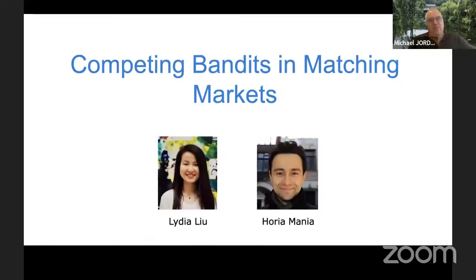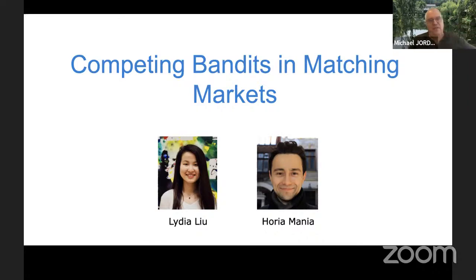Vignette two is about mechanism design for matching markets with exploration. This work was with Lydia Liu and Hoya Mani, and is very much a 'restaurants match with diners' kind of model. On the learning side of this interface, we're going to use the multi-arm bandit. Multi-arm bandits are a way to think about decision making where you don't a priori know your preferences, so you have to explore.